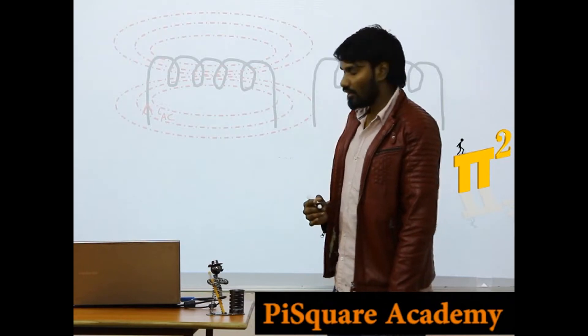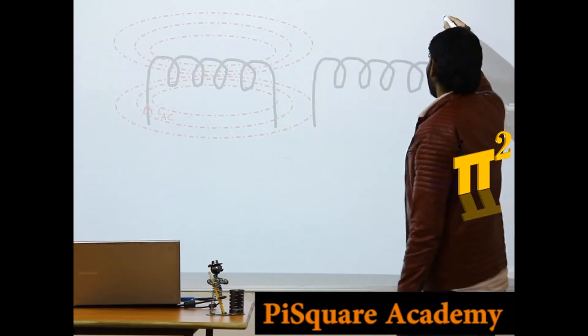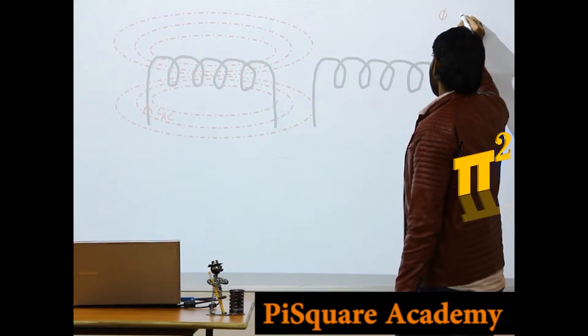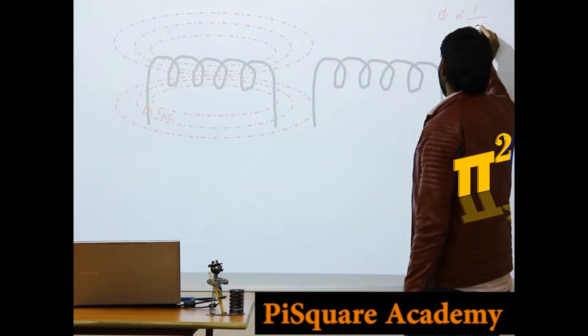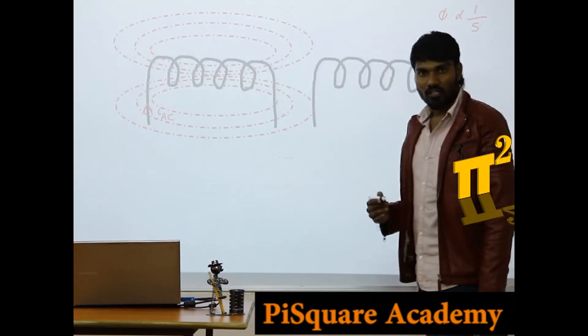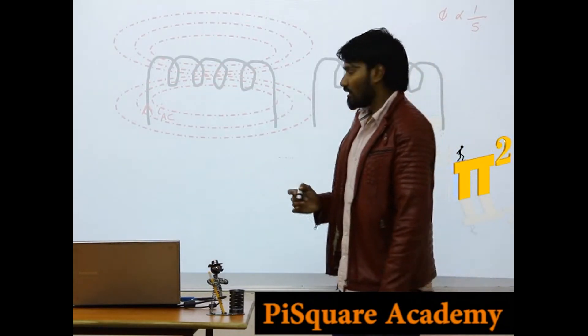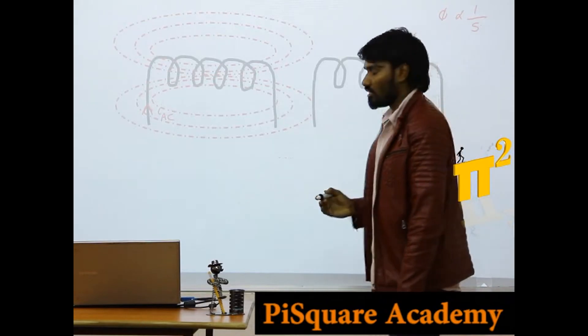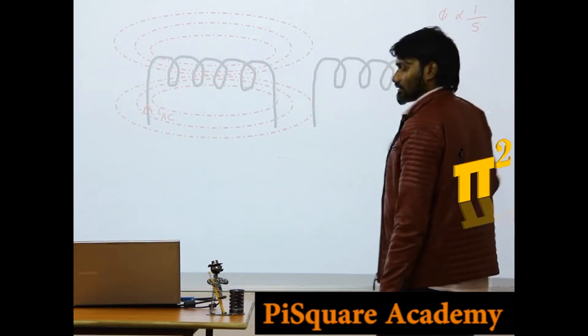Now if you just recall, we know flux is inversely proportional to the reluctance. Now to increase the amount of flux for the same amount of EMF, we should reduce the reluctance.